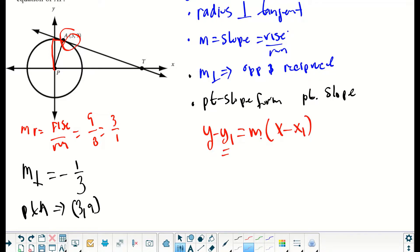We are going to do substitution in three different places: y₁, m, and x₁. And here we go. So what we have is y minus 9 equals negative one-third times the quantity x minus 3. What we have to do now is distribute this negative one-third to the quantity x minus 3.